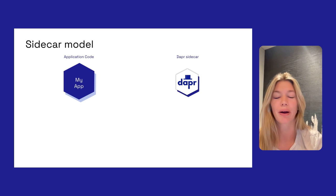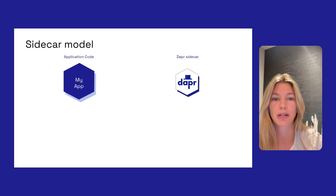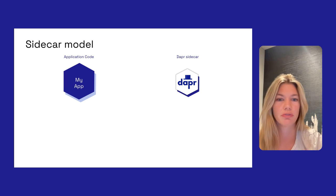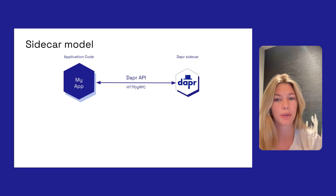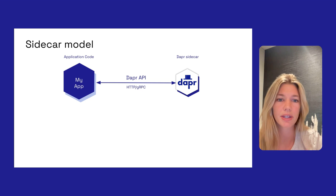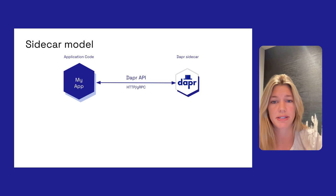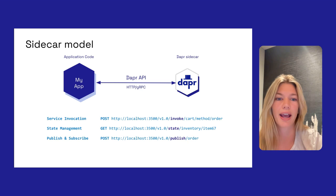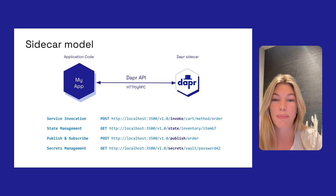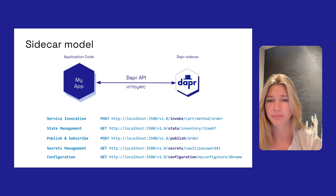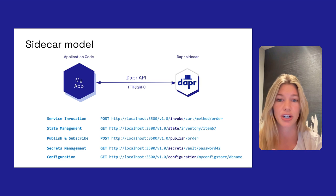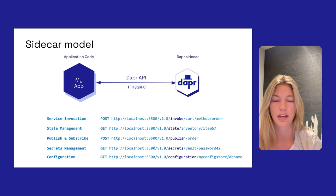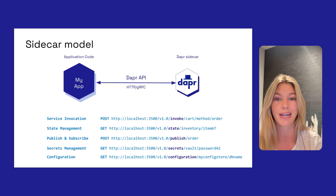Dapr exposes its HTTP and gRPC APIs through a sidecar architecture, running as either a container or a process. This means your application code is completely separate from the Dapr runtime. In addition to interacting with the sidecar through gRPC or HTTP, there are also eight language-specific SDKs that provide typed language APIs for interacting with the Dapr sidecar building block APIs. Because Dapr is language agnostic, you can use any combination of application frameworks and languages.